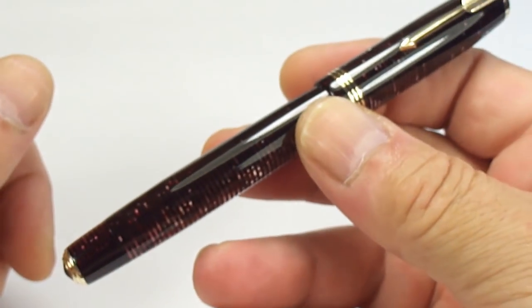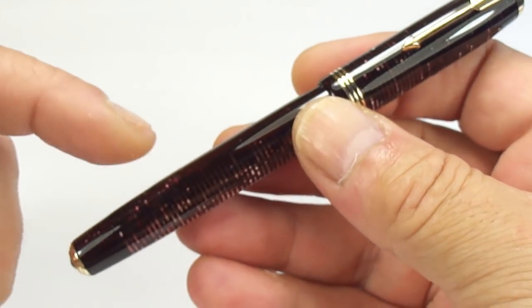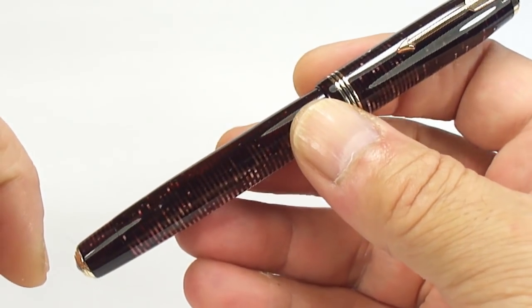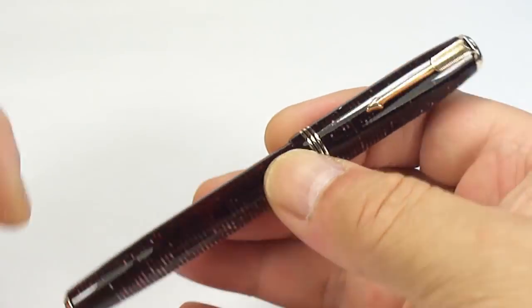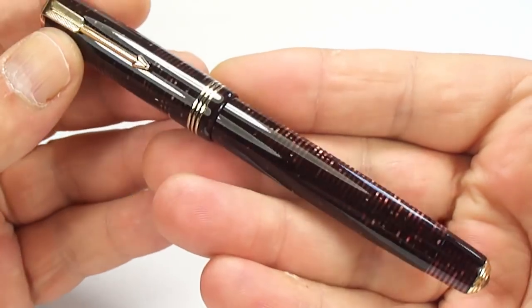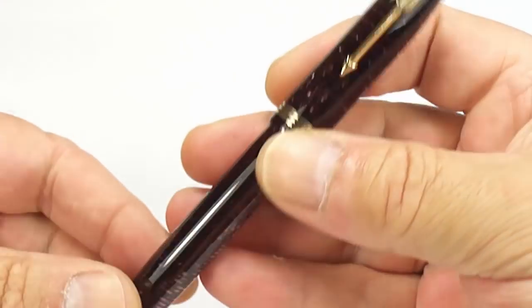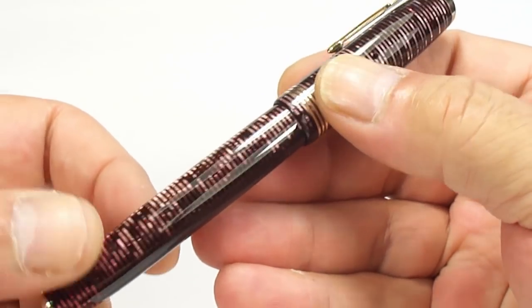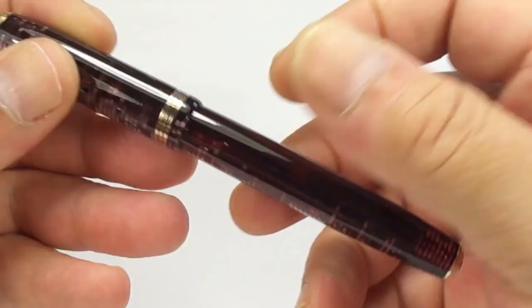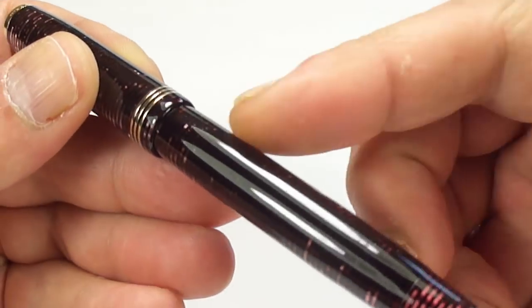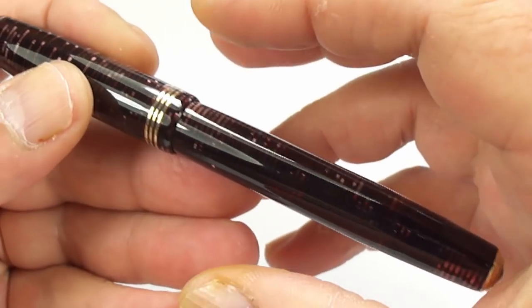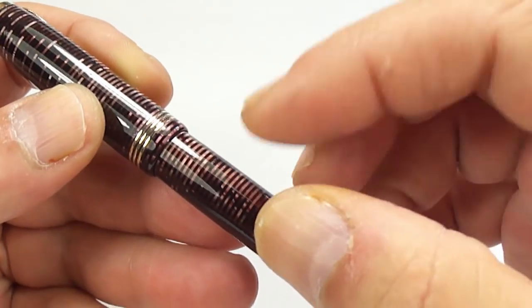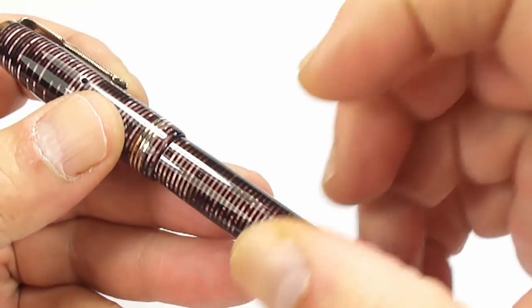As we said, this one is what they term as the Lockdown Filler, which once again, we'll show you in a moment. Now the Parker Vacumatics, they made them in lots of different colours, different sizes, different variants. This one is the standard, it was made in Canada. I'm not going to show you the barrel imprint, because it's a little bit on the worn side. I can make out the fact that it says made in Canada, that it's a Parker Vacumatic.